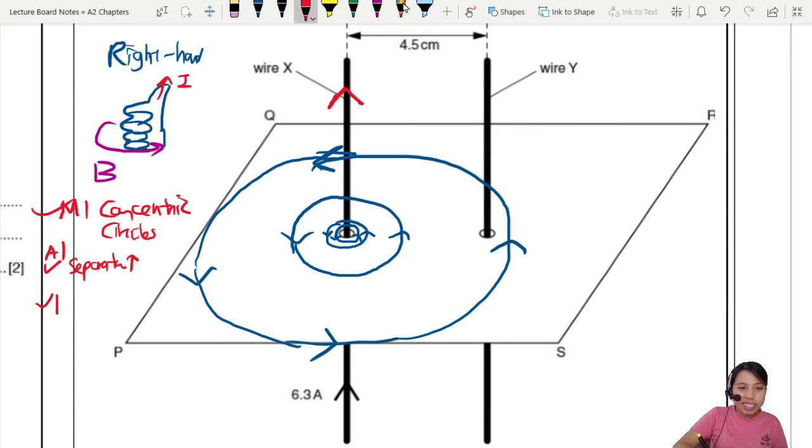Because the field is getting weaker and weaker, the further away from the wire you go. Third last mark is the direction. You got to draw arrow correctly. It should be anticlockwise pattern. How we know from our right-hand grip rule, the thumb. So that is three marks for this first part.